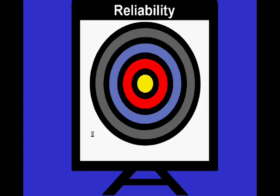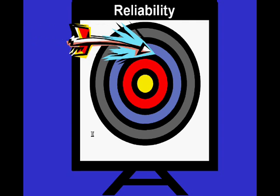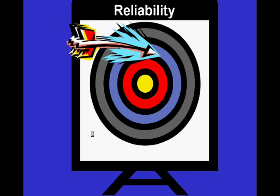Reliability in assessment means the ability to be consistent. If this was a target that an archer was firing at, he fired three consecutive arrows and it hit the same general area, we would say not only was the archer consistent, but in assessment we would say there is reliability in this.